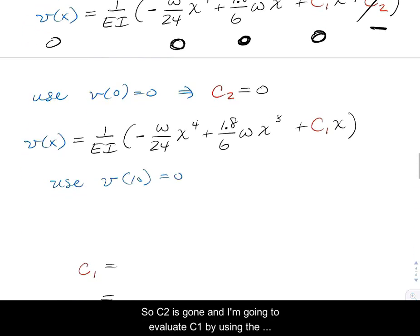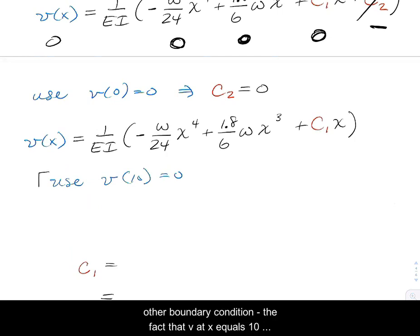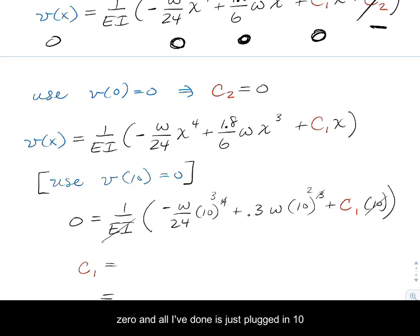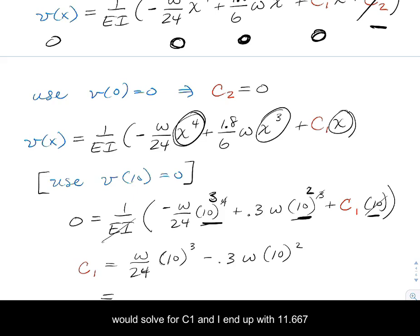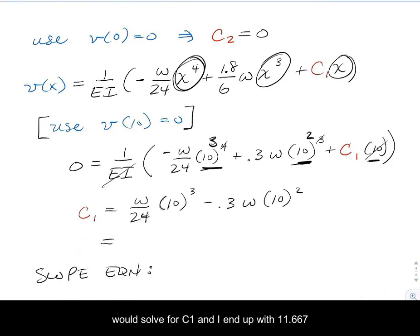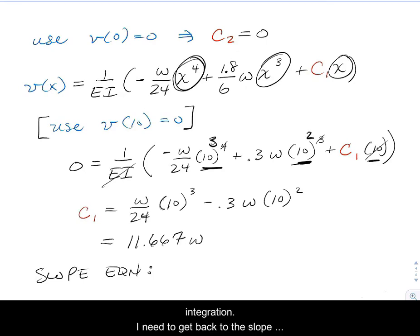I'm going to evaluate C1 by using the other boundary condition, the fact that v at x equals 10 equals 0. When we plug that in, I end up with 0. All I've done is plugged in 10 there, 10 there, and 10 there. 10 will cancel, that'll give me a squared into the third. I'm going to do my math and solve for C1. I end up with 11.667 times W. That is the other constant of integration.